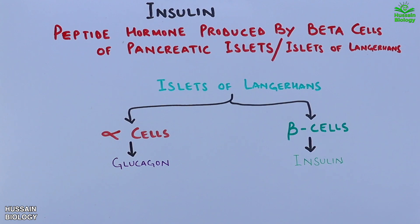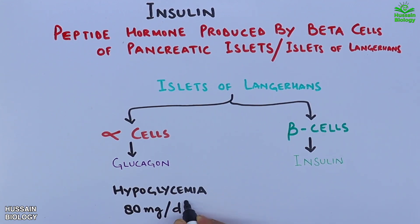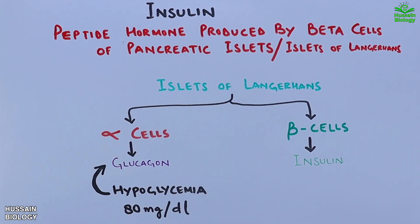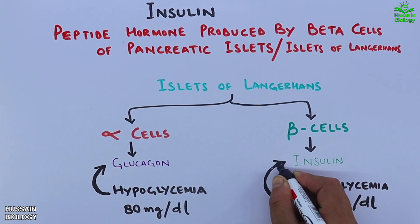It must be noted that these cells are not producing these hormones always. When we get hypoglycemia we get the production of glucagon, whereas when we get hyperglycemia we get the production of insulin.